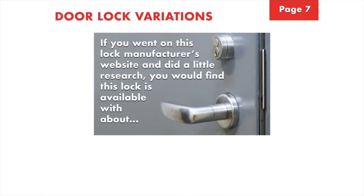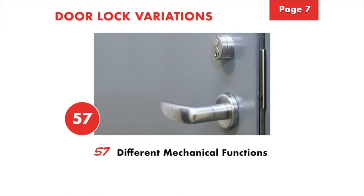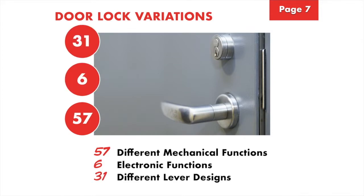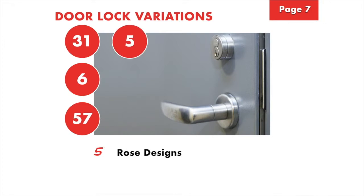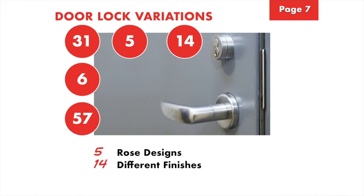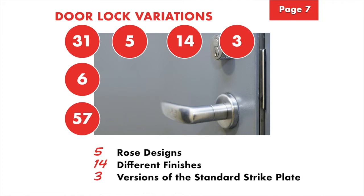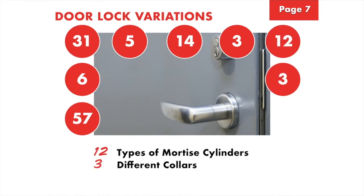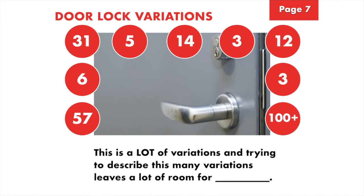If you went to this lock manufacturer's website and did a little research, you'd find that this lock is available with about 57 different mechanical functions, 6 electronic functions, 31 different lever designs, 5 rose designs, 14 different finishes, 3 versions of the standard strike plate, 12 types of mortise cylinders, 3 different collars, and about 100 plus keyways. This is a lot of variations. Trying to describe this many variations leaves a lot of room for errors.